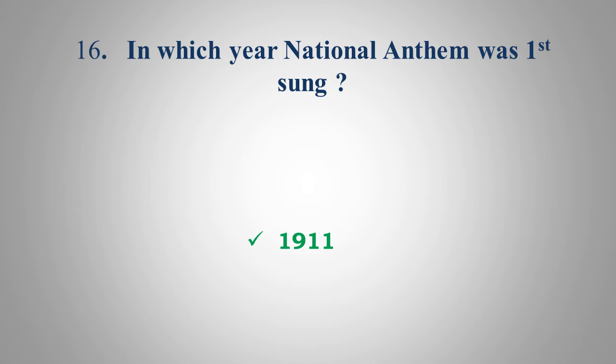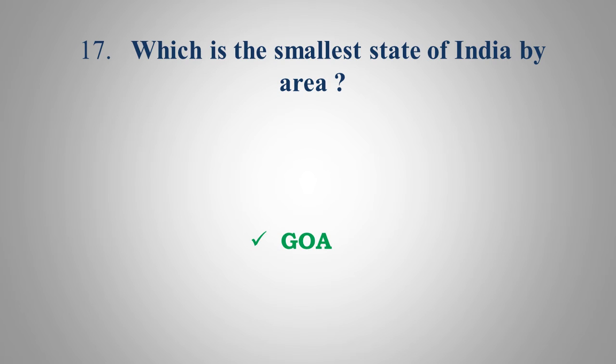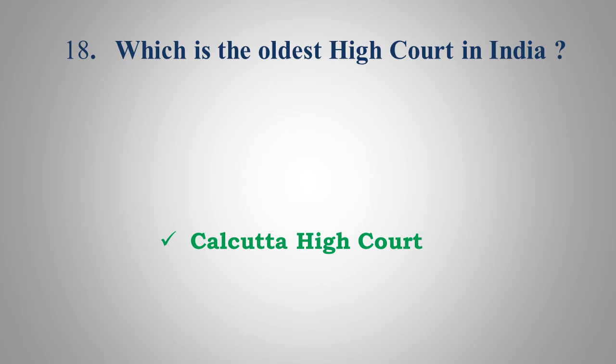Which book is written by Pandit Jawaharlal Nehru? Answer: Outline of History. Which is the smallest state of India by area? Answer: Goa. Which is the oldest High Court in India? Answer: Calcutta High Court.